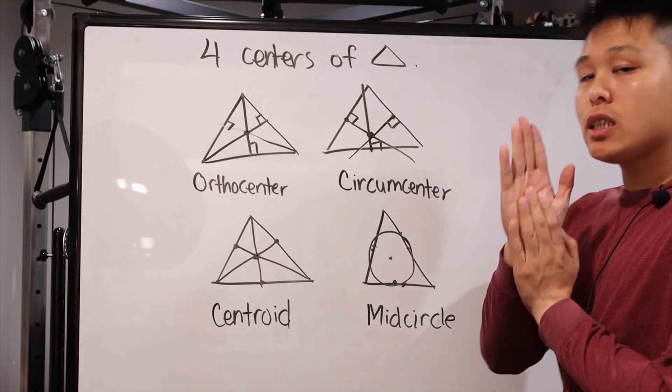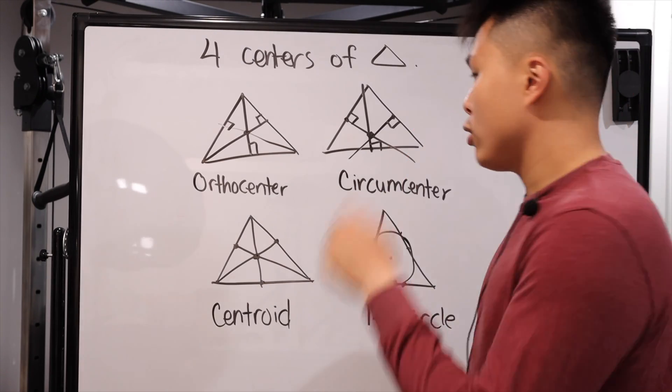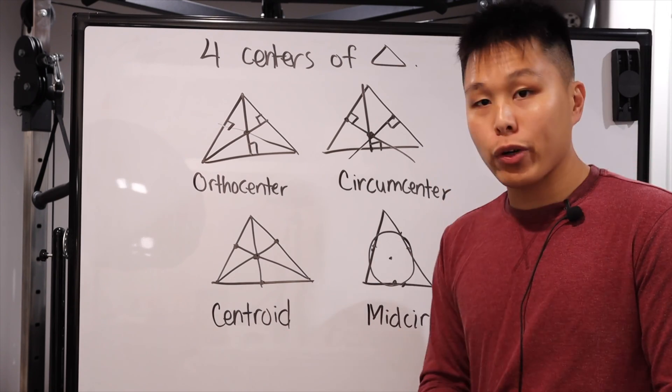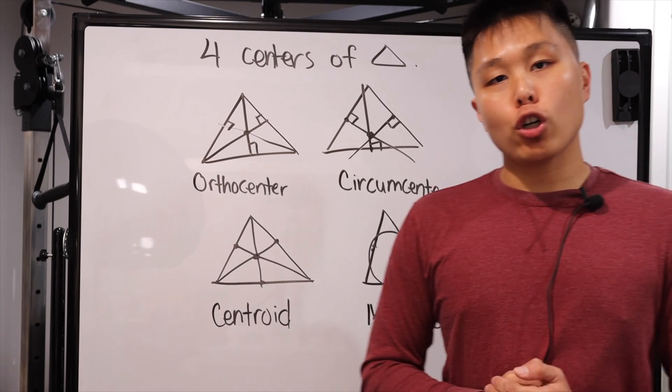So there you have it. That is the four centers of a triangle. Once again, we have the orthocenter, the circumcenter, the centroid, and the mid circle.